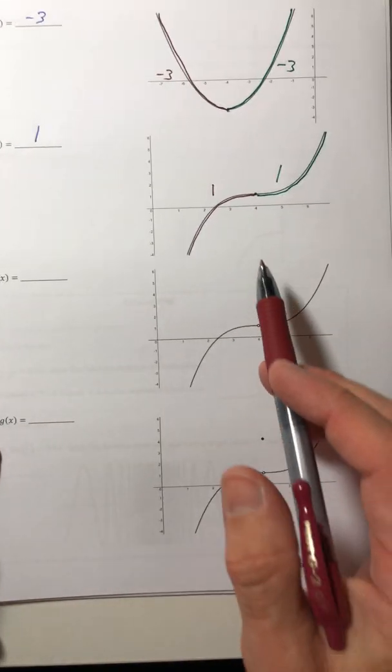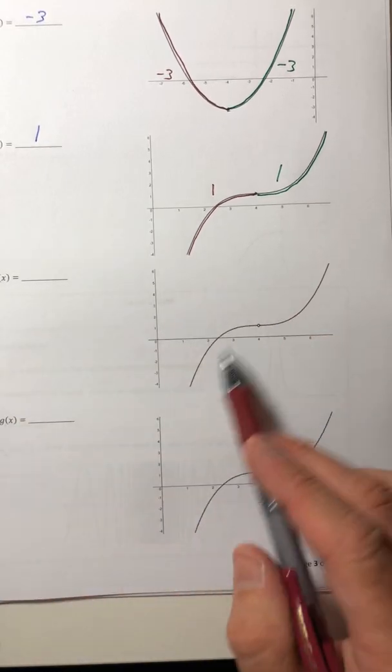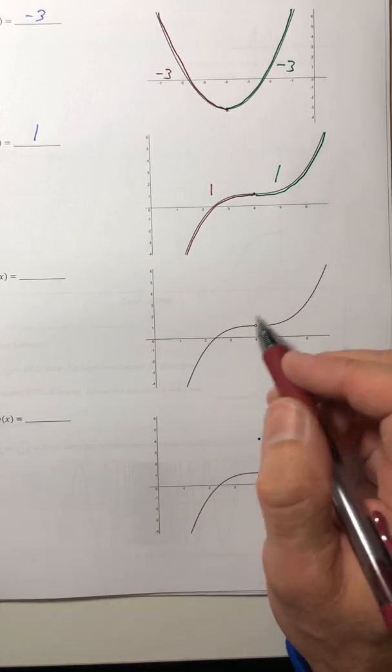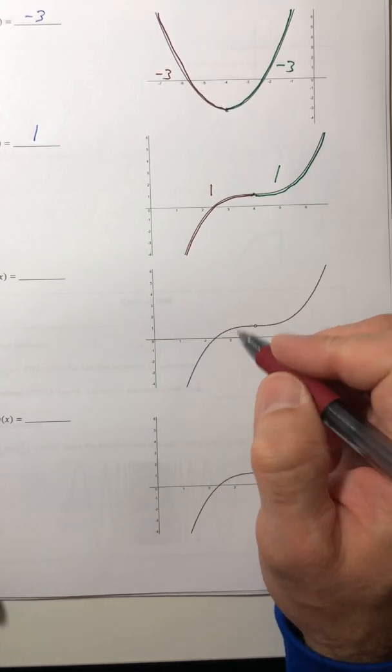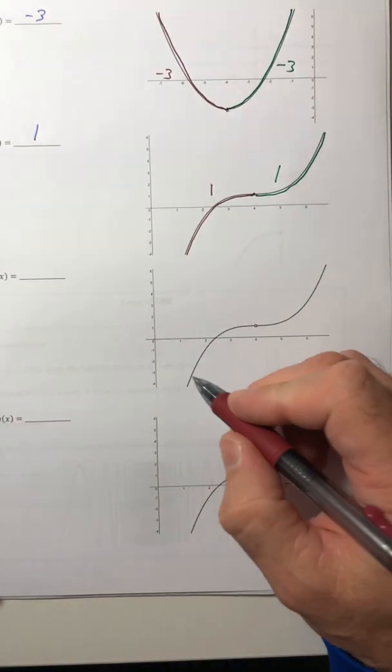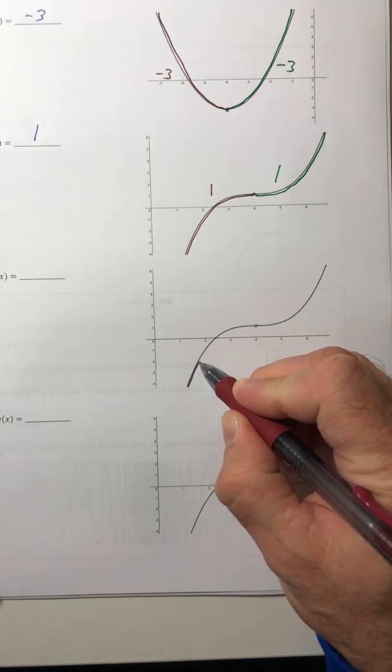Okay. Part D, almost the same thing. We're approaching the same value. It's almost the same graph, but there is a hole in there. Well, don't panic. Like, oh my gosh, I don't know what to do. Like, yes, you do. If you can do this, you can do anything. You just got to know how to interpret it, which you will.